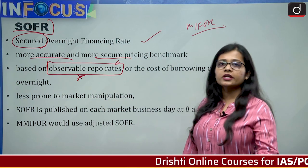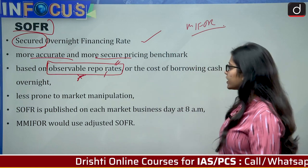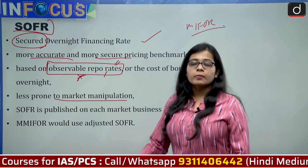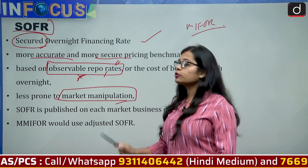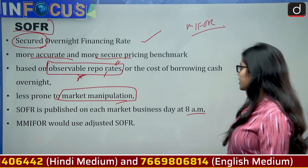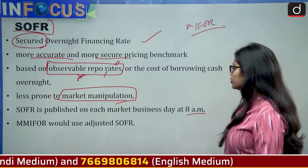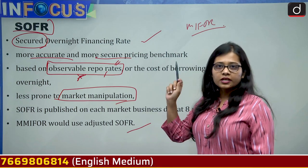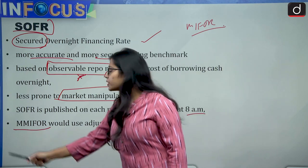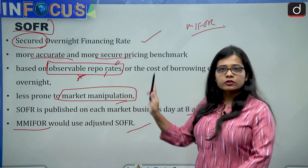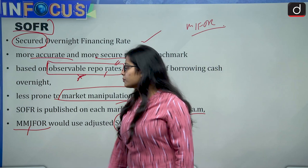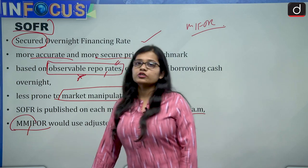It is important to note that SOFR is based on observable repo rates, making it less prone to market manipulation compared to LIBOR — one of LIBOR's key drawbacks was that it was manipulated by the market. SOFR is published on each market business day at 8 am. MMIFOR will use adjusted SOFR. As SOFR is more accurate and secure, so is MMIFOR, since MMIFOR is a modified version of MIFOR.